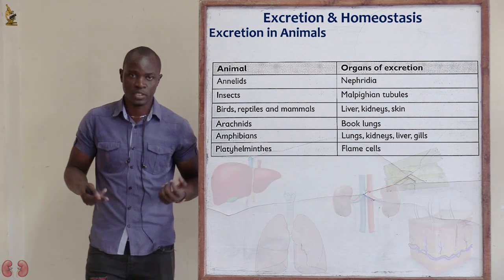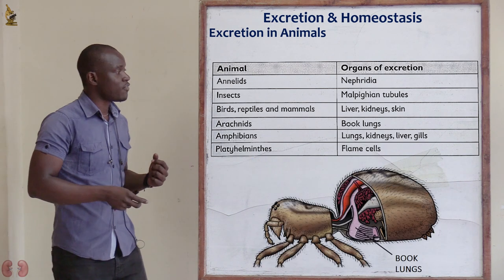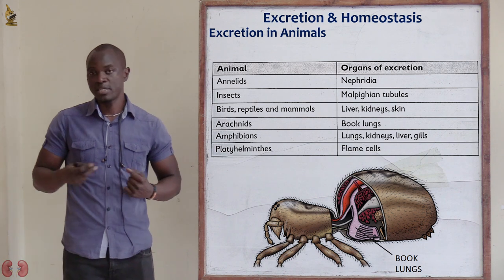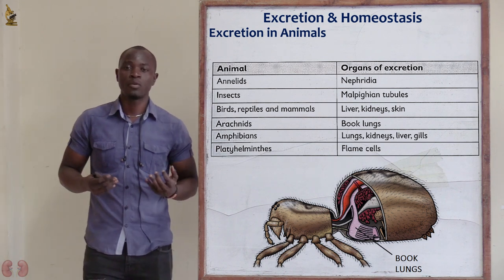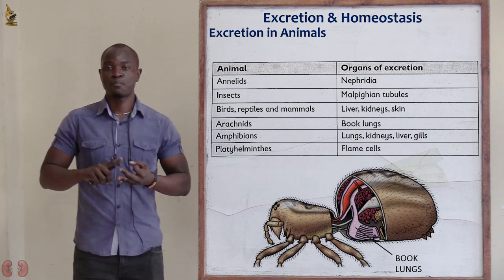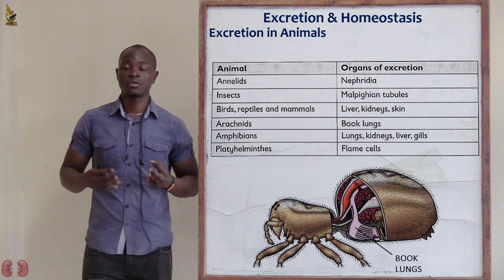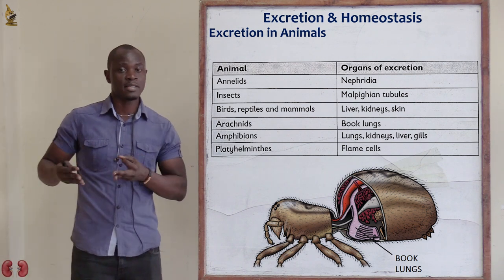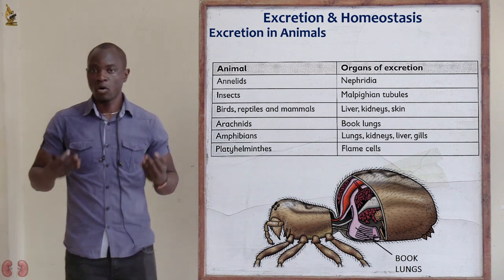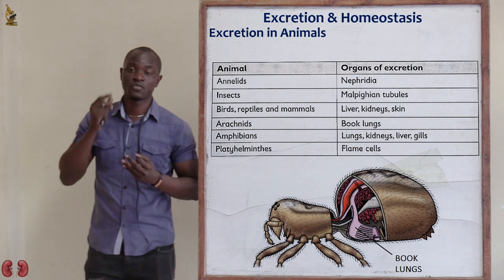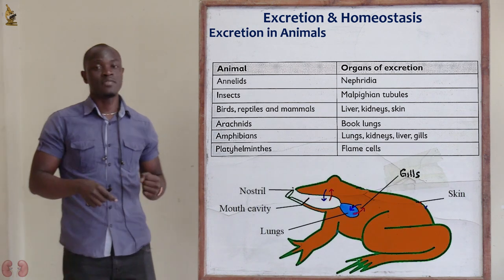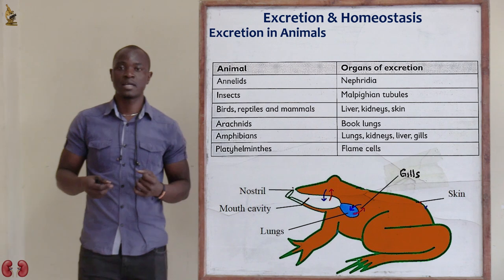We also have arachnids, which include ticks, fleas, and spiders. Arachnids use the book lungs as their organ for excretion of waste products from their bodies.